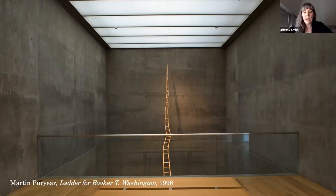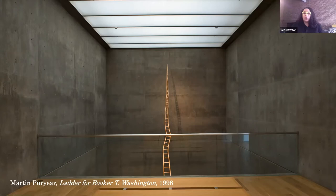So Martin Puryear named this work Ladder for Booker T. Washington. So Jen, can you tell us who Booker T. Washington was? Yeah, Booker T. Washington was born to slavery in 1856. And he overcame all the challenges of Jim Crow laws that enforced segregation in the United States South. And he went on to found Tuskegee Institute, a historically Black college in Tuskegee, Alabama.